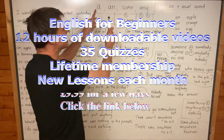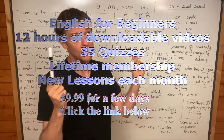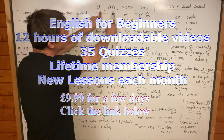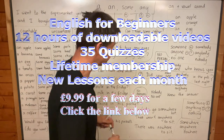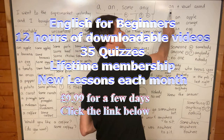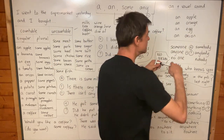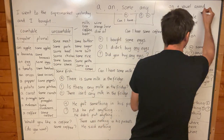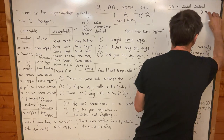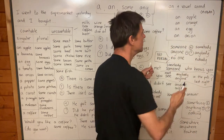A and an are almost the same. They are the same, but we use 'an' when the noun — this is a noun, it's a thing — we call things in grammar nouns.